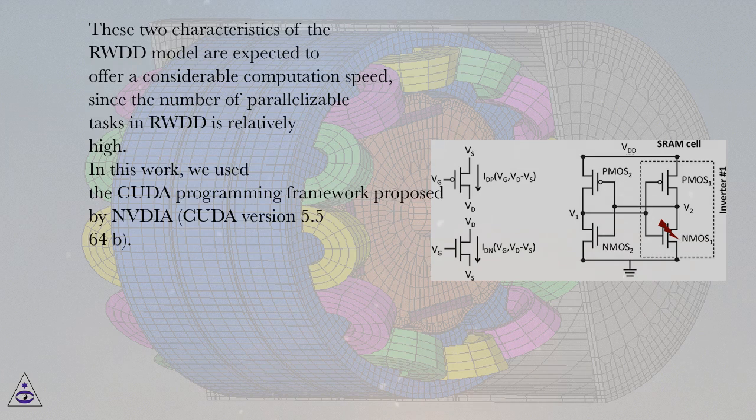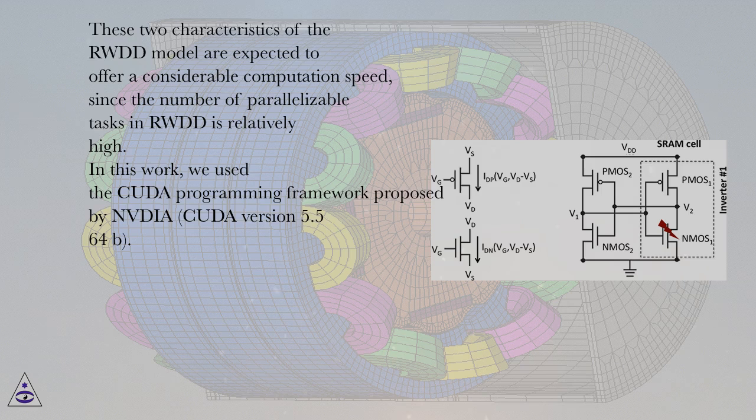These two characteristics of the RWDD model are expected to offer a considerable computation speed, since the number of parallelizable tasks in RWDD is relatively high.